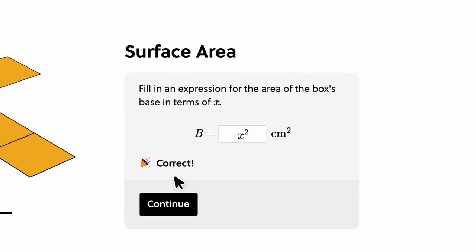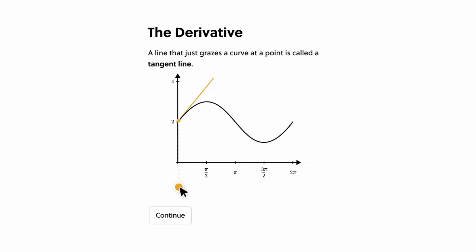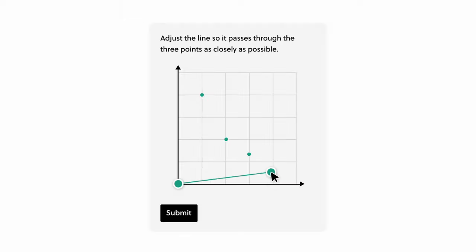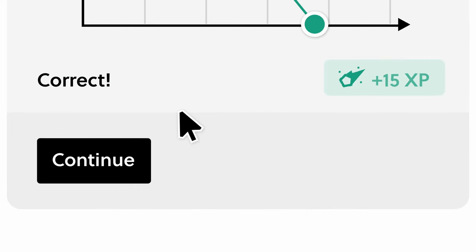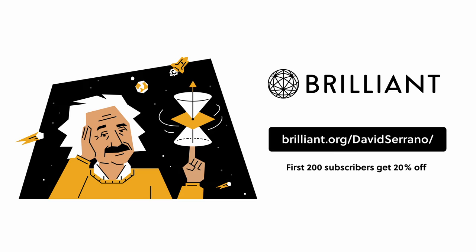With Brilliant, you can dive deep into subjects that matter to you, dedicating whatever time you have each day, even if it's just a quick 5-minute session. They offer a plethora of courses in algebra, vectors, geometry and more, all vital for any game developer looking to create solid algorithms. Check out Brilliant.org/DavidSerrano for a free 30-day trial. Plus, the first 200 to sign up through this link will snag a 20% discount on their annual plan.